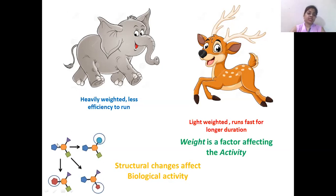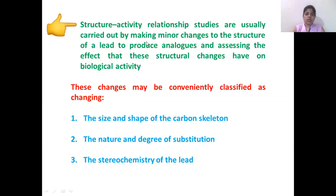Similarly, if we consider chemical structures, the structures possess a certain biological activity. Whenever the structure is changed, there is a change in the biological activity. We can see in the figure a parent molecule with a basic nucleus and three groups attached. If we make certain changes and produce various analogues, the resultant structures are known as analogues. These analogues have different biological activities than the lead compound. Structural activity relationship studies are carried out by making minor changes to the structure of a lead to produce analogues, and then assessing the effect of these structural changes on the biological activity.